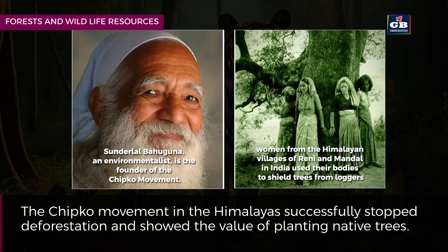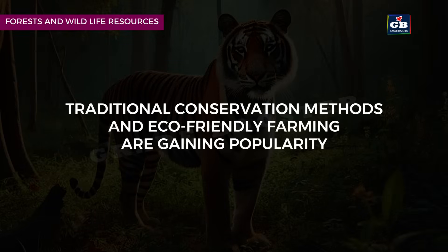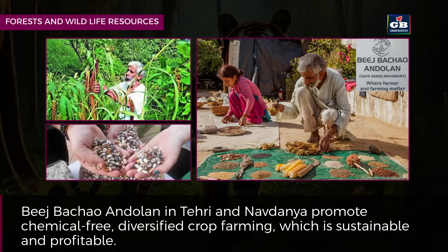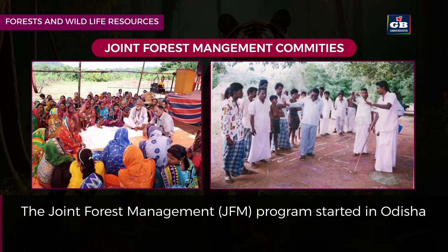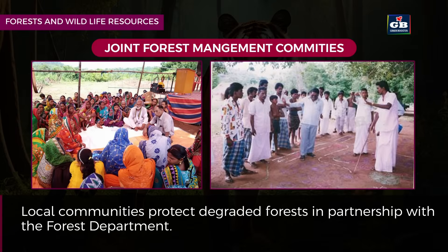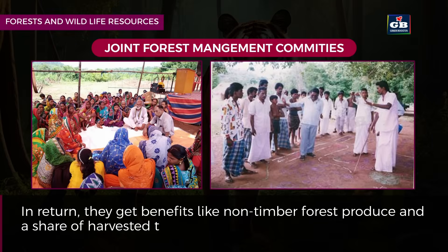The Chipko movement in the Himalayas successfully stopped deforestation and showed the value of planting native trees. Traditional conservation methods and eco-friendly farming are gaining popularity. Beej Bachao Andolan in Tehri and Navdanya promote chemical-free, diversified crop farming which is sustainable and profitable. The Joint Forest Management (JFM) program started in Odisha in 1988. Local communities protect degraded forests in partnership with the Forest Department, and in return they get benefits like non-timber forest produce and a share of harvested timber.